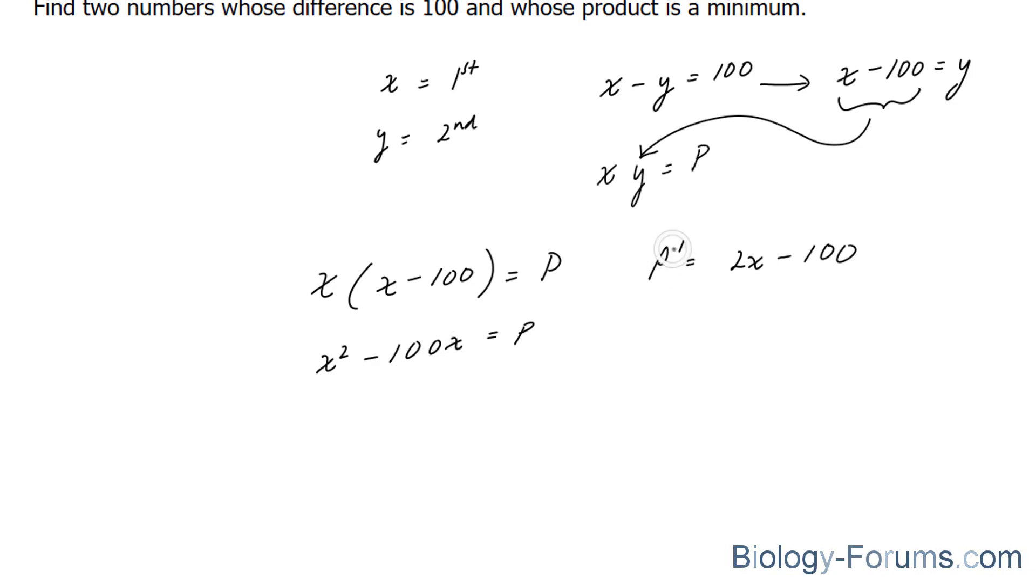And I'm now going to set p prime equal to 0 and solve for x. And if I solve for x, I'll have to bring this number over and divide both sides by 2 at this point, which leads me to x is equal to 50. So this is a critical number that we can use to determine the local minimum or maximum.